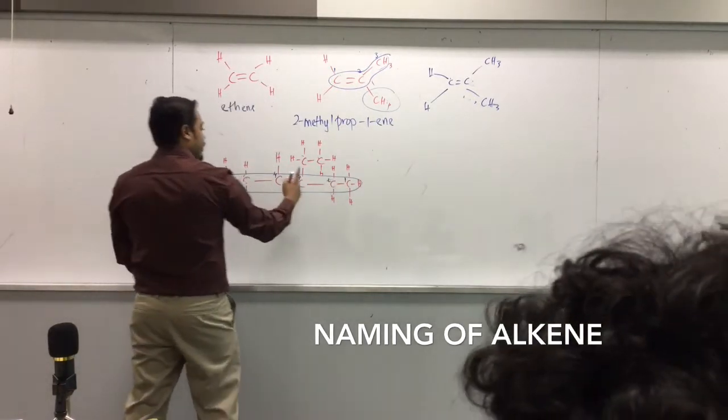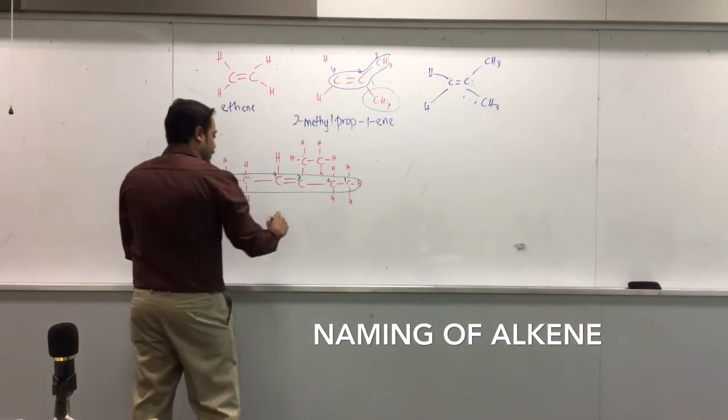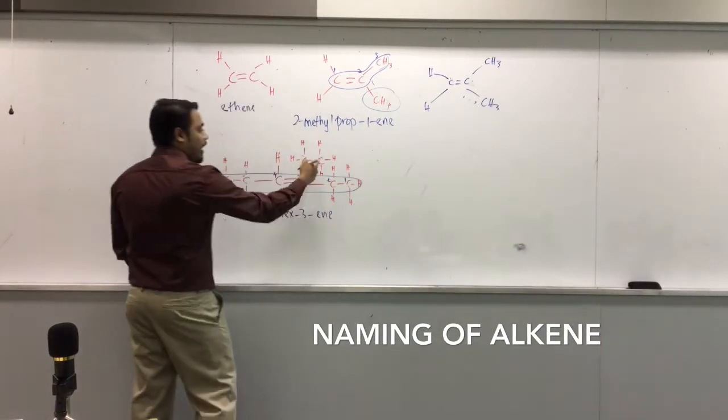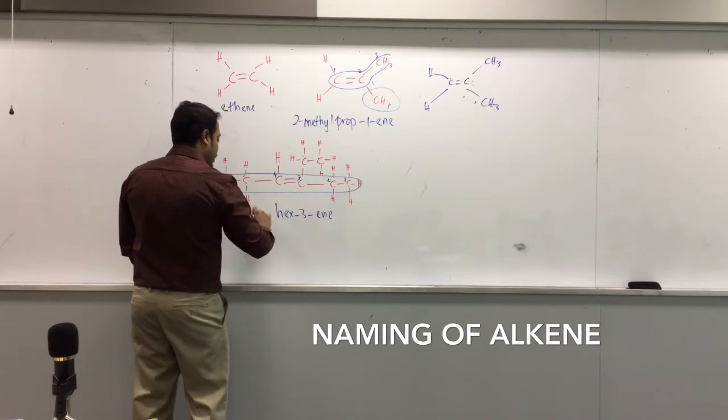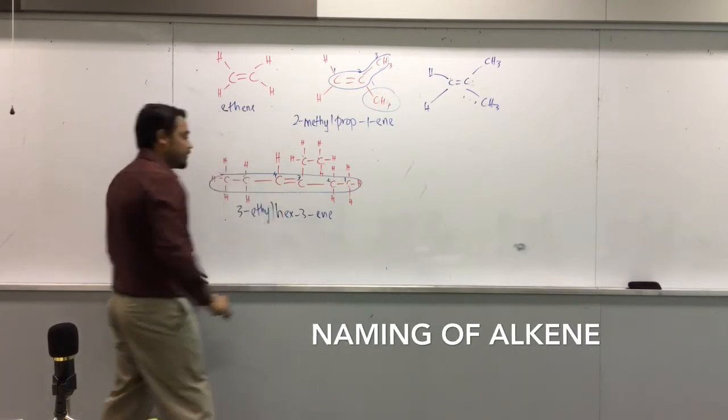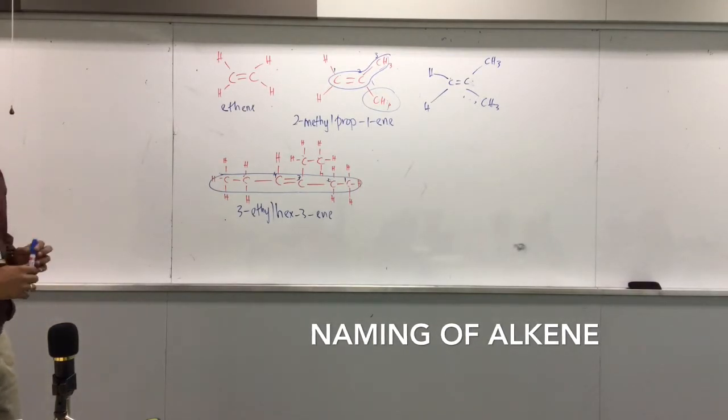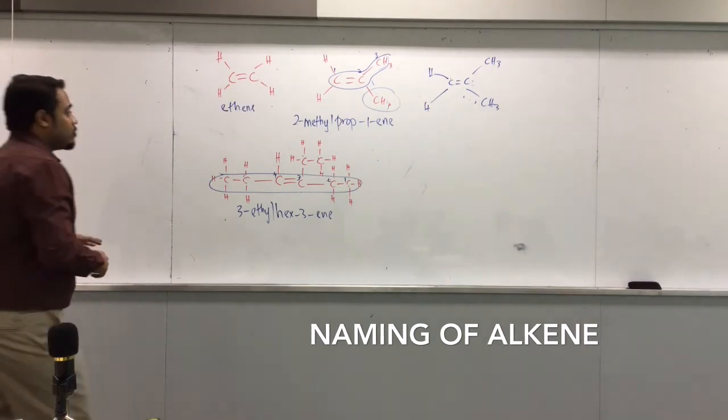What is this? One, two, three, four, five, six. So that's a hex three ene, and you have a three ethyl hex three ene. Right? Done. Clear? Okay.